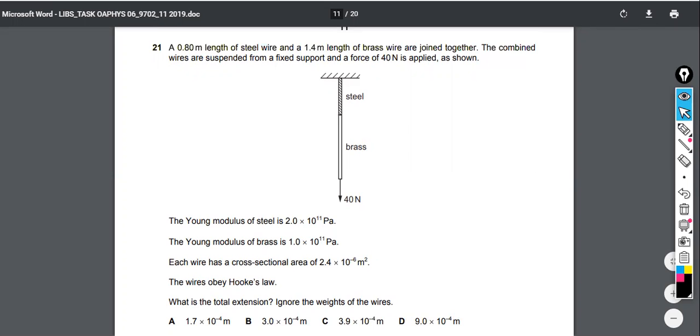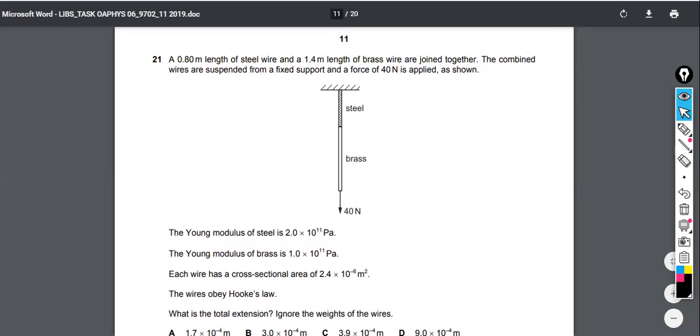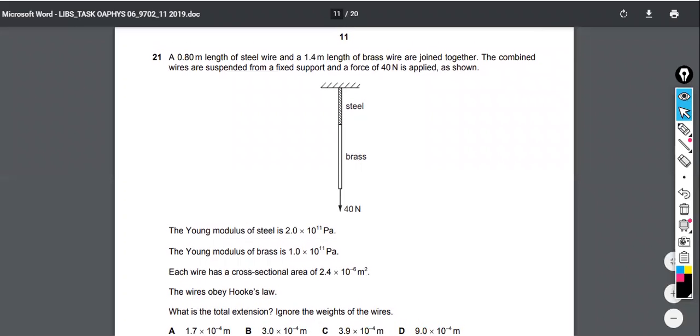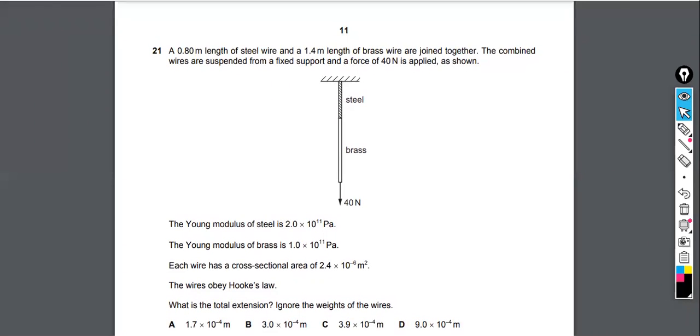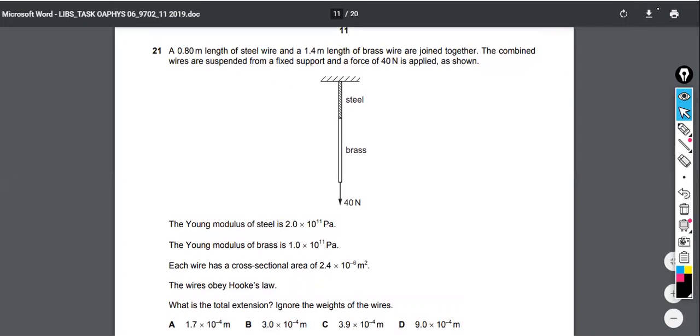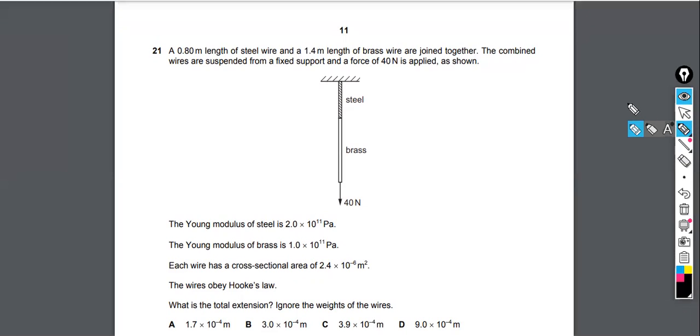So let's write down what we're given and kind of make use of the figure here. They tell us the length of this steel. I'll put L. I'll grab my writing tool. So here we have the steel. I'm going to call it L, the original length, and that one is 0.8 meters. And the length of my brass is 1.4 meters.